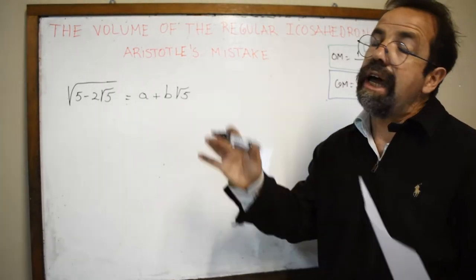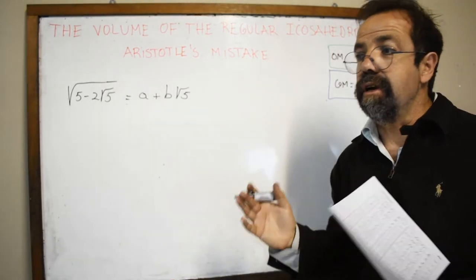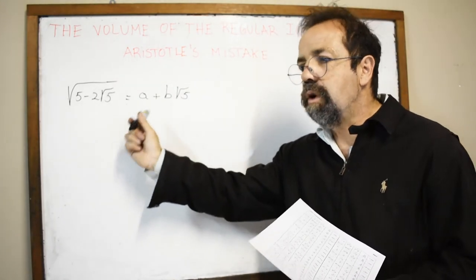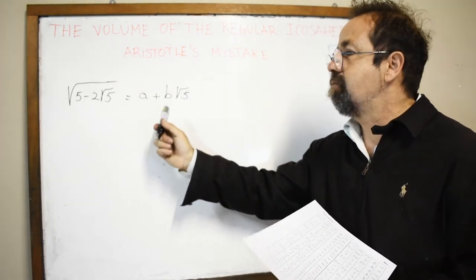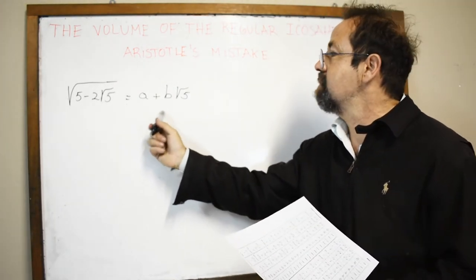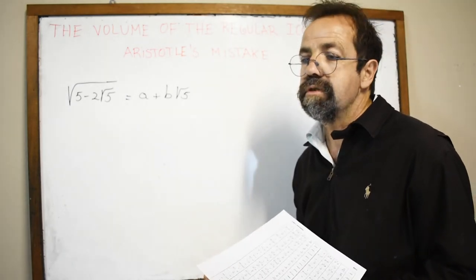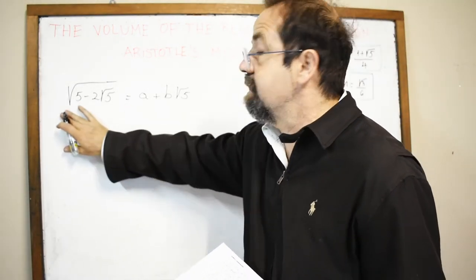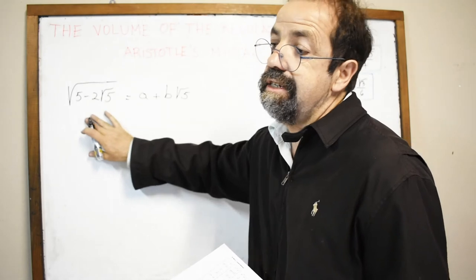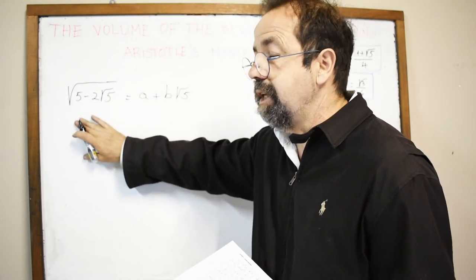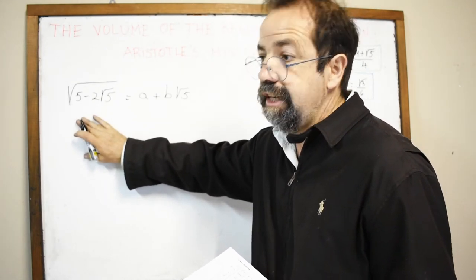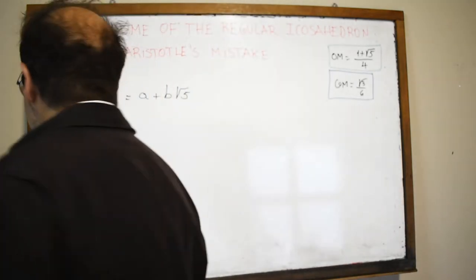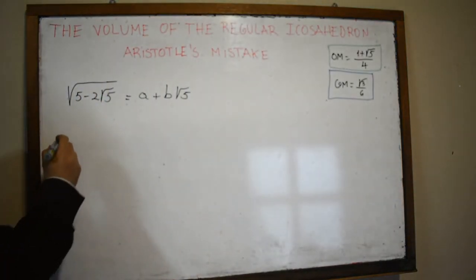Sometimes we are lucky and can find rational numbers a and b to simplify a nested radical expression, and sometimes we cannot. In this case we must leave the expression as is. But in other cases we are lucky and can simplify.